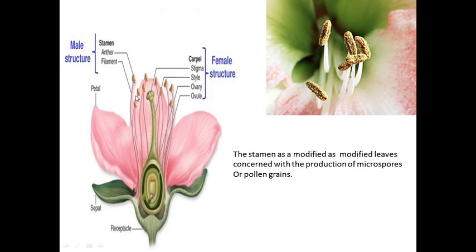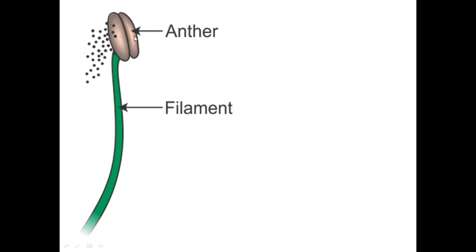Today we will be dealing with the male reproductive part, the third whorl, that is the androecium. The stamen, which is what we call the androecium, is defined as a modified leaf concerned with the production of microspores or pollen grains. It is considered a primitive leaf which has evolved over time to give rise to the male reproductive part.